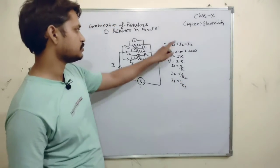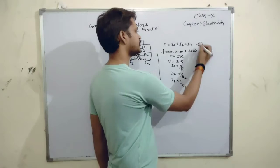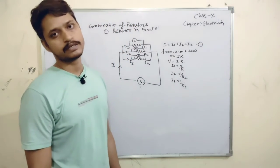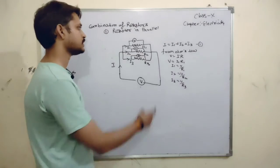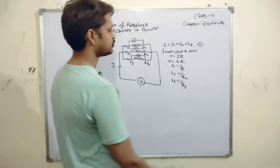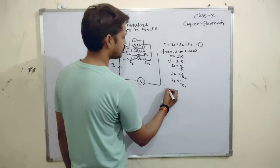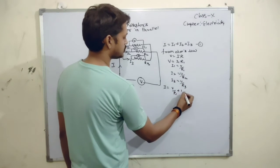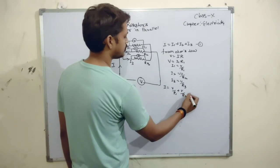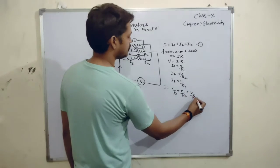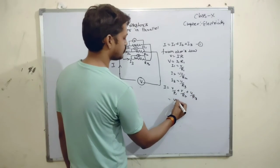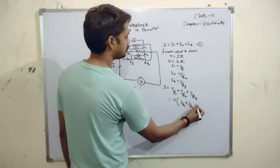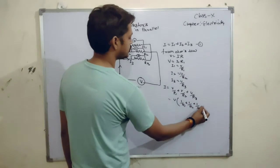Now, we can put the values in equation number 1. Remember that potential is same across each resistor and current is different. Total current is equal to this. We can put the value here. I will be equal to V by R1 plus V by R2 plus V by R3. We can take V as common from all. We have V times 1 by R1 plus 1 by R2 plus 1 by R3.